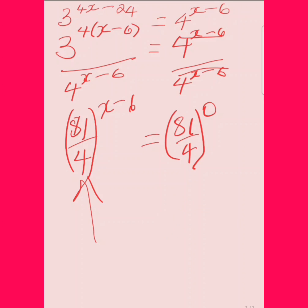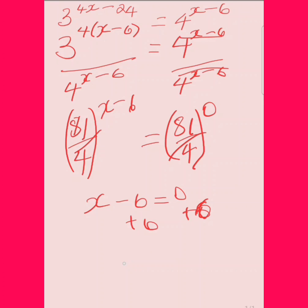Because the bases are now the same, I can drop the bases and equate the exponents: x minus 6 is equal to 0. Adding 6 to both sides, we get x is equal to 6. This is the solution for this problem. Thank you for watching, see you next time!